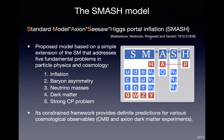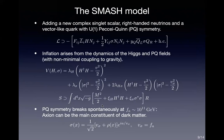One important point is that this model is very predictive, because requiring that these five problems are addressed simultaneously leads to a very constrained parameter space. With this constrained framework, we can have definite predictions for various cosmological observables. The SMASH model is constructed by adding a new complex singlet scalar sigma, right-handed neutrinos, and vector-like quarks, all charged under a global Peccei-Quinn symmetry.